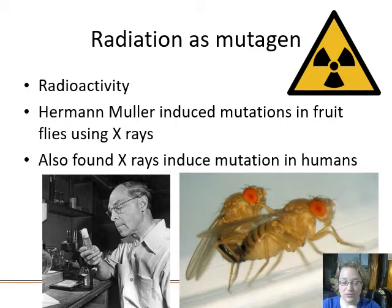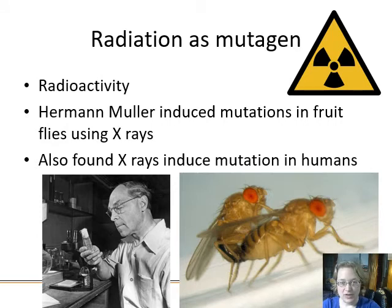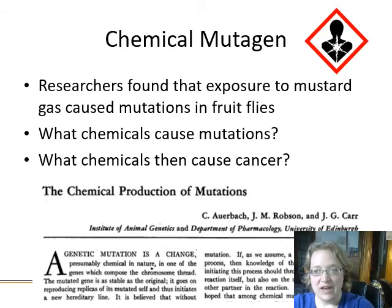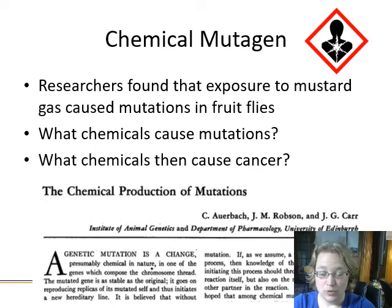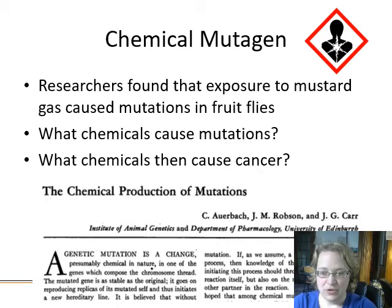Hermann Muller found that he could increase the number of mutations in fruit flies by exposing them to X-rays, and discovered X-rays also induce mutations in humans. He rang the alarm that anyone doing X-ray work needed protection, but was ignored for a long time until people working with X-rays started dying of cancer. Chemical mutagens like mustard gas, used in World War One, also increased mutation rates in fruit flies.